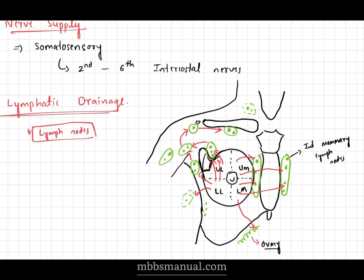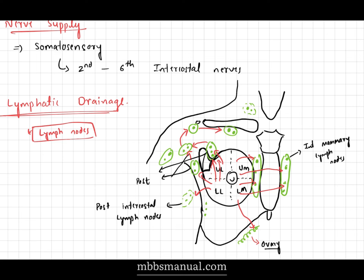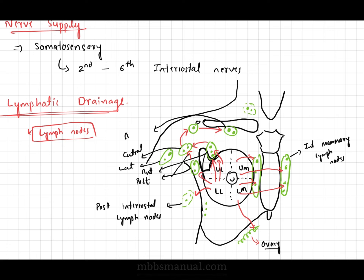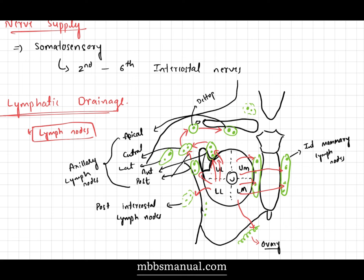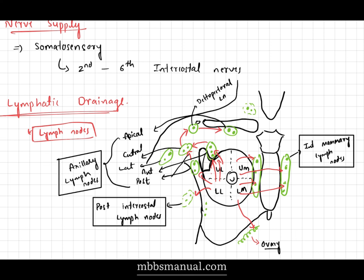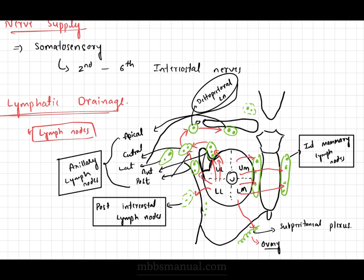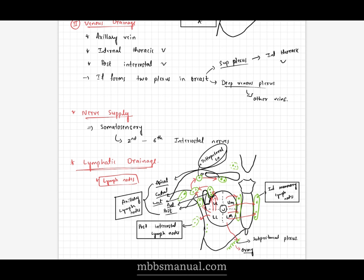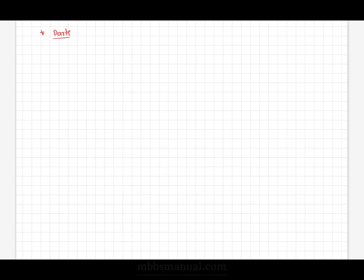Lymph nodes draining the breast: the lymph is drained into the following groups. The prominent and major group is the axillary lymph nodes, which has five components: anterior, posterior, central, lateral, and internal mammary lymph nodes. Additionally, posterior intercostal lymph nodes and cephalic or deltopectoral lymph nodes. There are four major groups of lymph nodes draining the mammary gland: the axillary group, deltopectoral lymph nodes, internal mammary lymph nodes, and posterior intercostal lymph nodes.